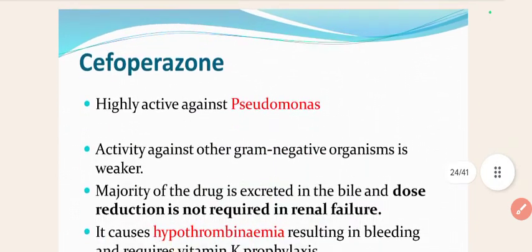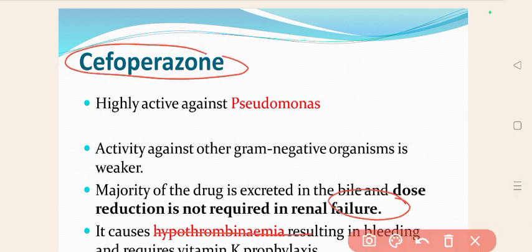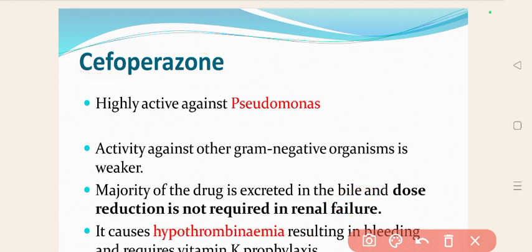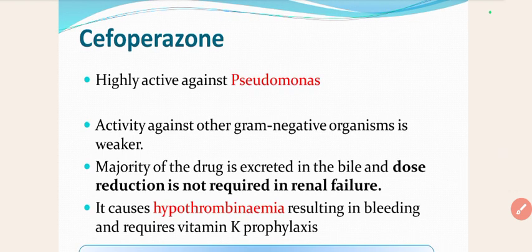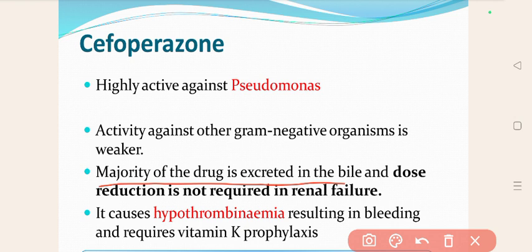The third drug in this category is cefoperazone. It is highly active against Pseudomonas; however, its activity against other gram-negative organisms is weaker. You can use cefoperazone to treat Pseudomonas, but the highest activity is shown by ceftazidime. The majority of cefoperazone is excreted in the bile, so dose reduction is not required in renal failure. It causes hypoprothrombinemia, which results in bleeding and requires vitamin K prophylaxis.